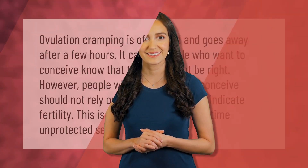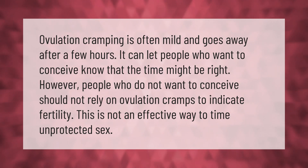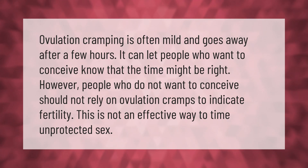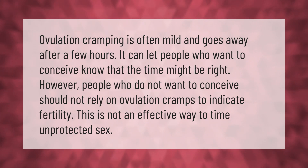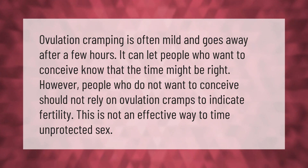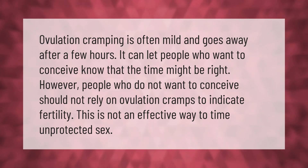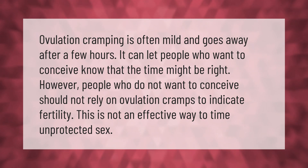Ovulation cramping is often mild and goes away after a few hours. It can let people who want to conceive know that the time might be right. However, people who do not want to conceive should not rely on ovulation cramps to indicate fertility — this is not an effective way to time unprotected sex.